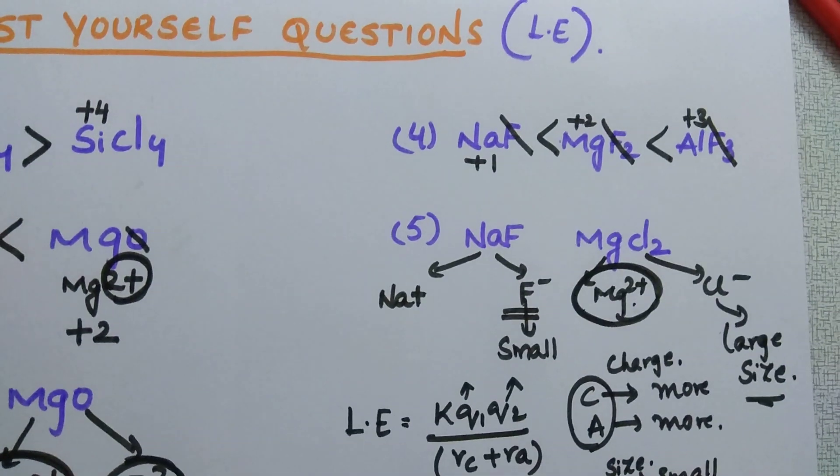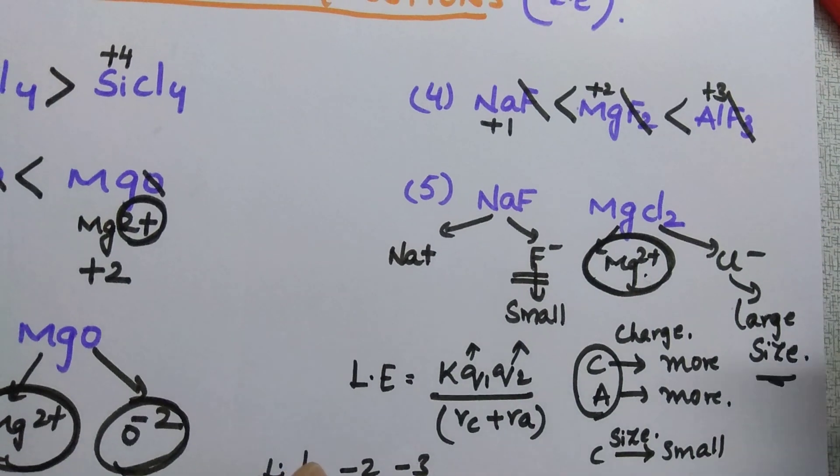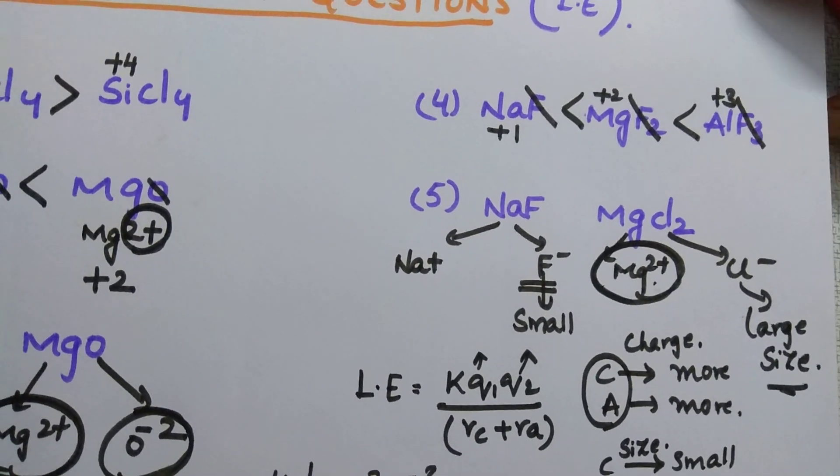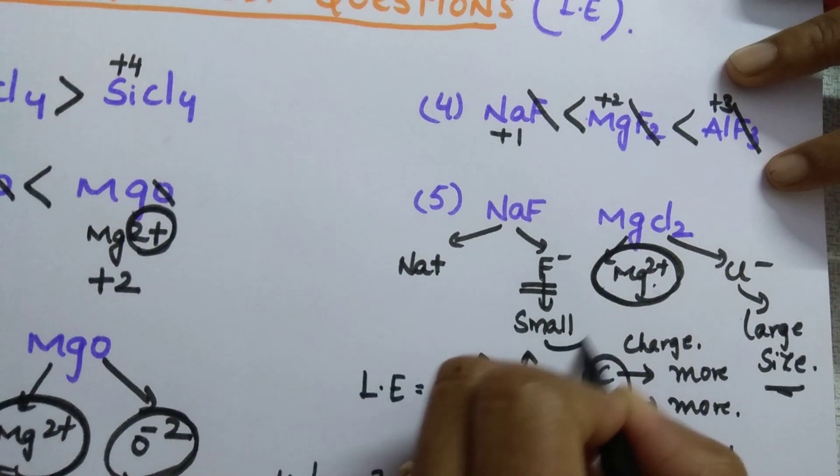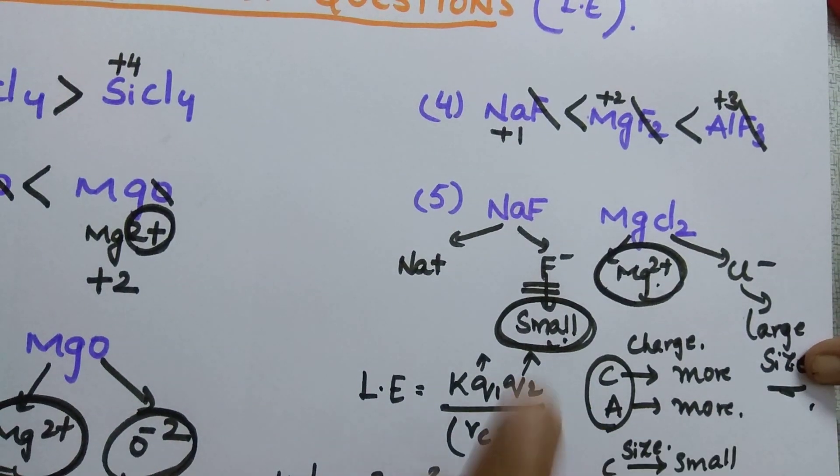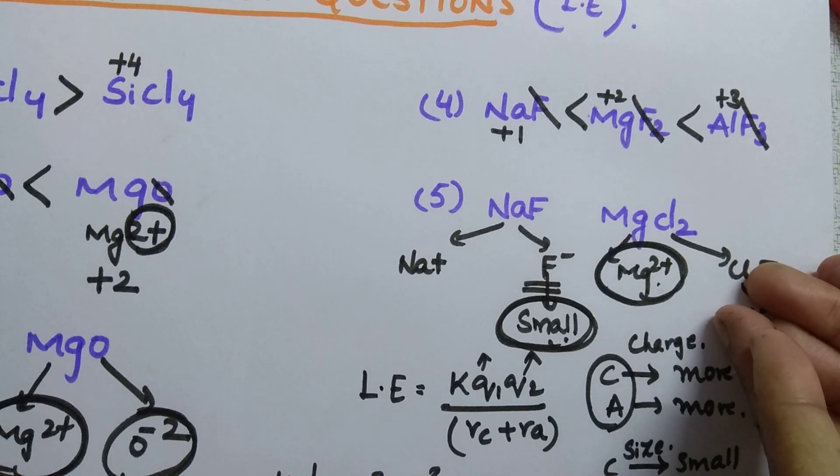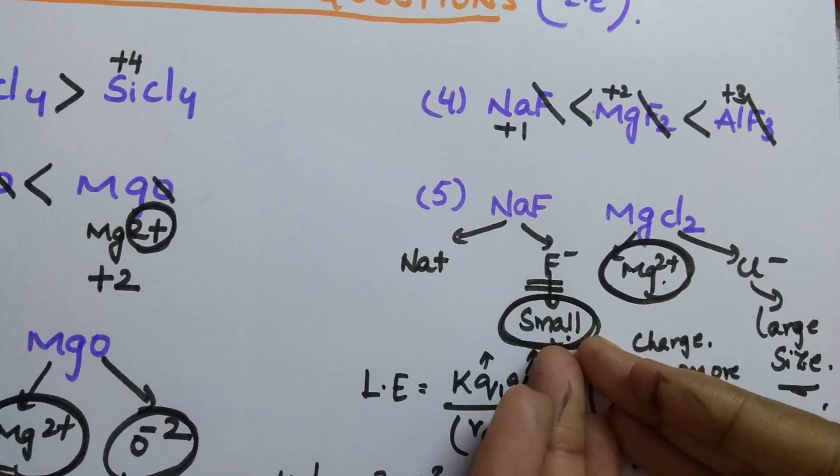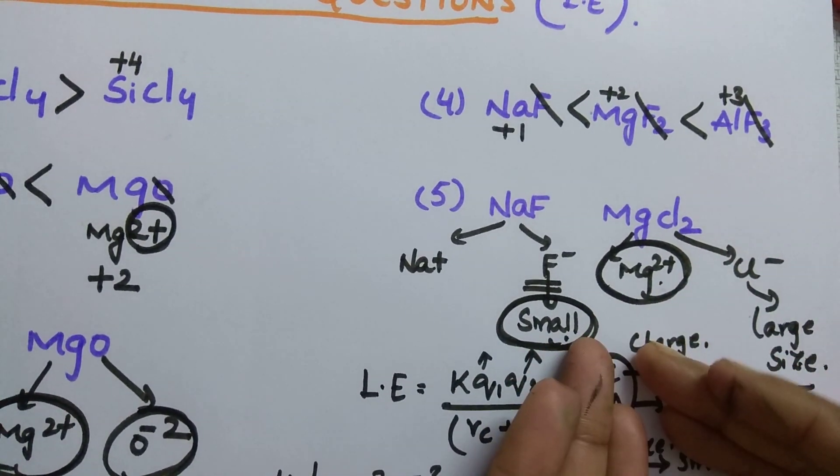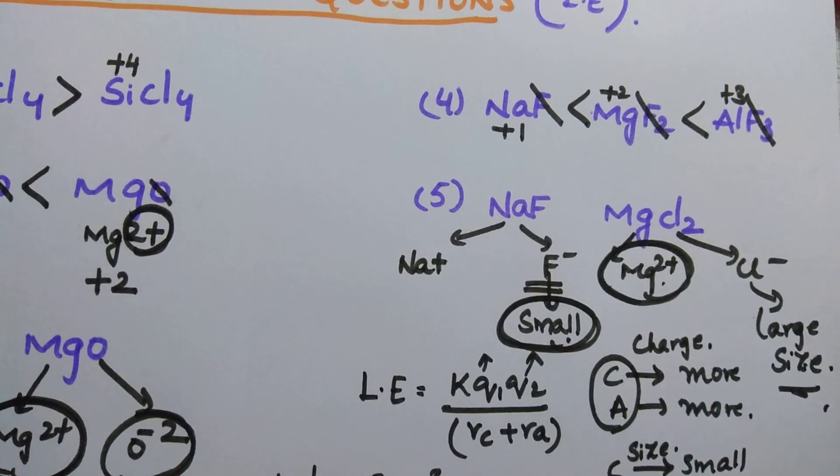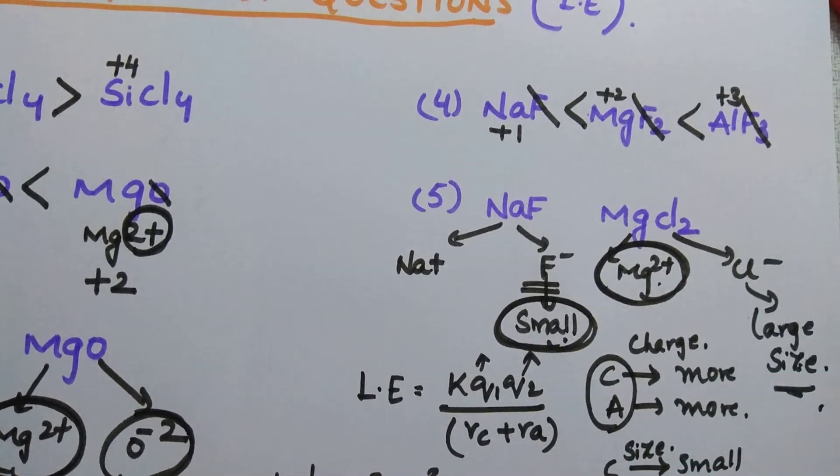But charge is same in both the cases. Then for which one you have to give the priority? See students, here one is small size and this is large size. If smaller is the size, more will be the lattice energy. In this, cation is showing more lattice energy. In this, anion is showing more lattice energy. So for which one you have to give more priority? Click on pause and try one time.